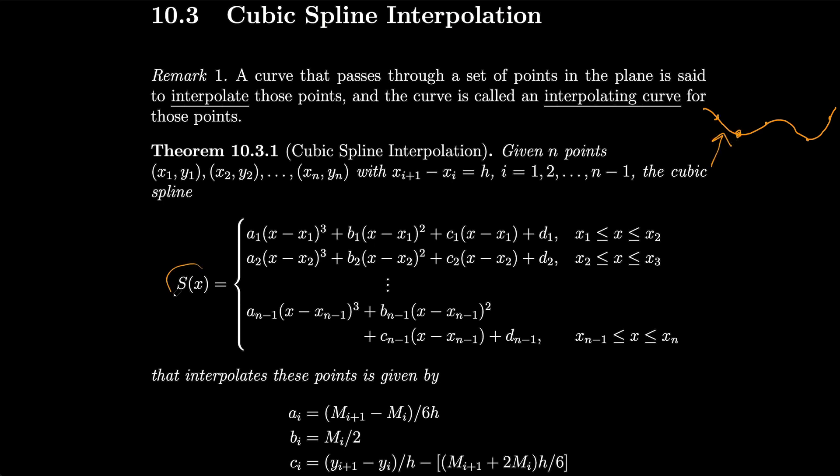So like for this S(x), it's going to be our spline by this theorem. For each of these intervals x1, y1, x2, y2, etc. through these points, we have a different chunk of this S(x) curve given by some cubic polynomial.